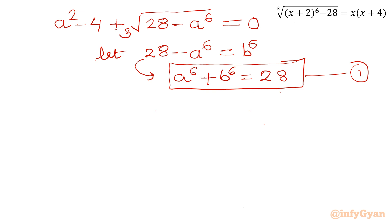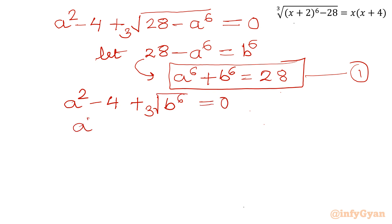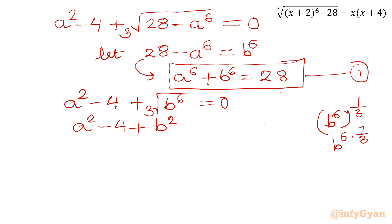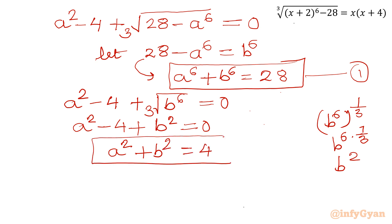Once I apply the substitution, I write a squared minus 4 plus cube root of b power 6 equal to 0. So I can write a squared minus 4 equals b power 6 to the power 1/3. Using exponent law, that becomes b squared. So a squared minus 4 plus b squared equal to 0, or a squared plus b squared equal to 4. This is our equation number 2.